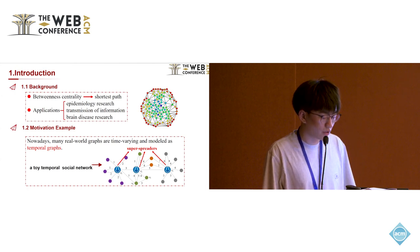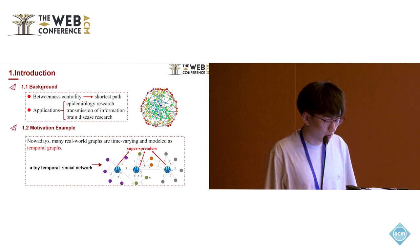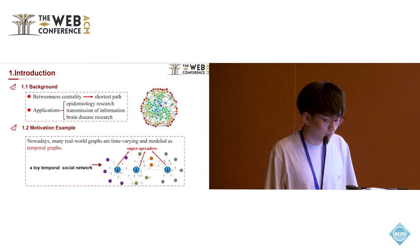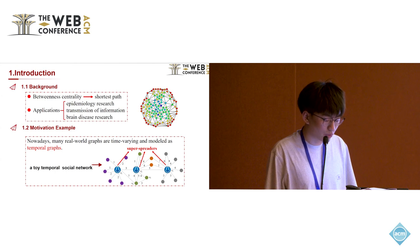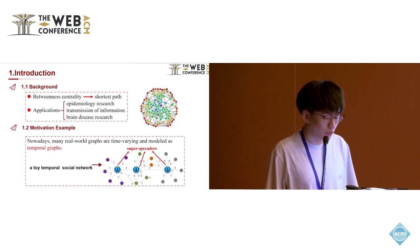Vertices present individuals and edges present fleeting contacts. Vertices with high betweenness centrality, such as V1, V2, and V3, are crucial for identifying super-spreaders to control infectious disease.